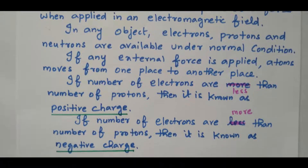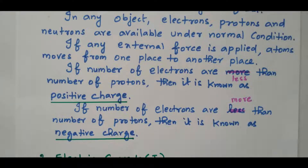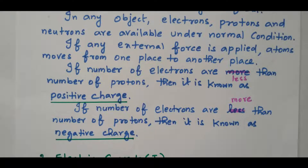If the number of electrons is more than the number of protons, then it is known as negative charge. So if electrons are more, automatically it is a negative charge. Charge is purely based on the number of electrons and protons. While applying any external force, atoms are moving. If electrons are more than protons, it is a negatively charged body; if electrons are less, it is a positively charged body.